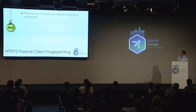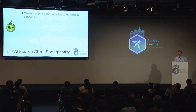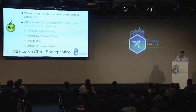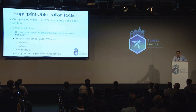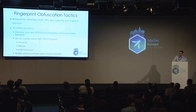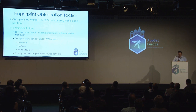For H2 passive client fingerprinting, we observe the client's behavior while establishing an HTTP 2 connection. We look at how the client does flow management, what the default values are, how it handles headers in terms of order, the connection settings, and so on. By default, using H2 exposes some characteristics of your software client, and some of you might not be interested in doing that. So there comes the question of how to obfuscate ourselves in light of that.